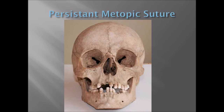The persistent or retained metopic suture is this suture that runs right up the middle of the forehead. It doesn't cause any weakness - it's not like their forehead is weaker than someone without it. We're all born with these sutures to allow the head to squeeze through the birth canal, and usually they obliterate. The metopic suture almost always obliterates by about age 10. However, some people retain it throughout life, even into their 80s or 90s. It's about 10 percent of people.